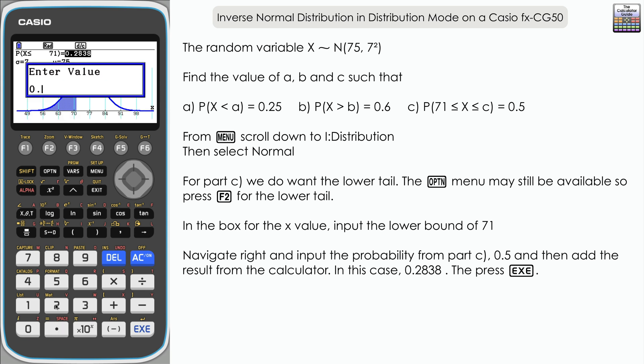What we're going to do is we're going to add 0.5 and this value together: 0.5 plus 0.2838. We can just copy it as it's still highlighted here above our entry box. Press execute. You can see now that the probability value has changed to 0.7838, as has the value of X. We've now got 80.495. This is the value of C.